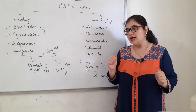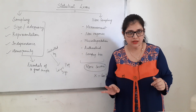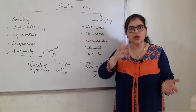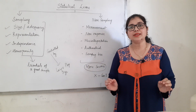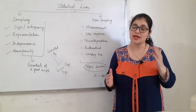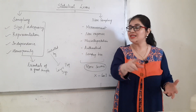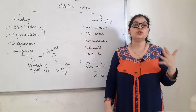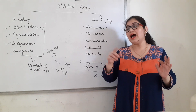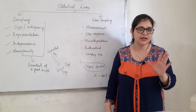Finally, homogeneity. Agar tum sabka weight ki study kar rahe ho aur sabka weight tumne kilograms mein liya hai, toh phir kilograms mein hi lo. Agar grams mein liya hai toh grams mein hi lo. Agar pounds mein liya hai toh pounds mein hi lo. Kehne ka matlab hai, data sample mein homogeneity hona bahut zaroori hai — ek jaisa lena hai taaki comparison aur analysis karna aasan ho. Sometimes hum kahi par pounds, kahi par kilo likh dete hai — that is a sampling error, woh garbad ho jati hai. Toh sampling errors hain 4 — adequacy, representation, independence, aur homogeneity.